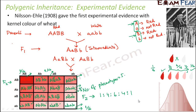If you compare this phenotypic ratio with the phenotypic ratio of human skin color in the F2 generation — that ratio was 1:6:15:20:15:6:1 — it was so much larger because the number of intermediate phenotypes were more, and that was because the number of polygenes were more. Human skin color is determined by 3 pairs of polygenes, whereas the kernel color of wheat is determined by 2 pairs of polygenes.